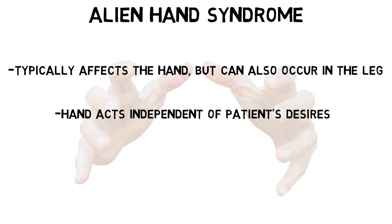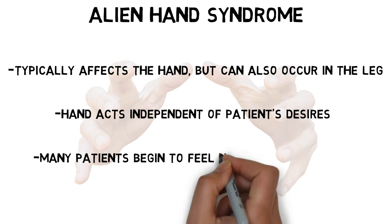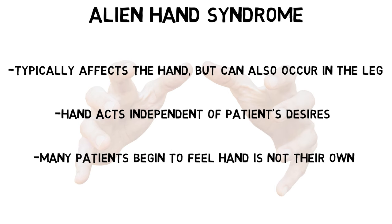The hand may interact with objects the patient has no desire to interact with, or even interfere with tasks performed with the other hand. One early case report described a patient whose own hand tried to choke her. Many patients also begin to feel that their hand is not actually their own.